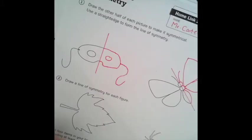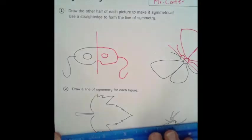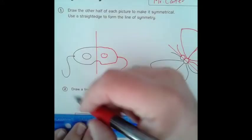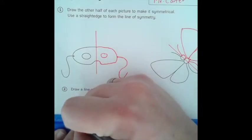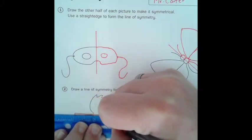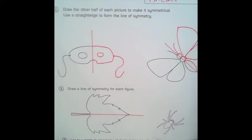Number two: Draw a line of symmetry for each figure. For the leaf here, the line of symmetry is going to go right down the stem here. It's going to cut that stem almost in half. Again, I'm using my straight edge. It's going to go right to the top of that peak there.